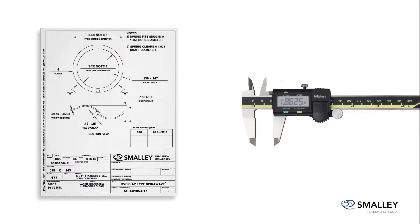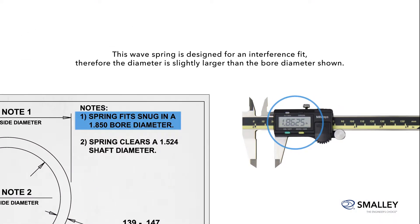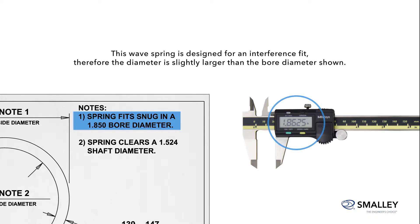You can now compare the caliper measurement with the outside diameter listed on the Smalley print to ensure that the part is within tolerance.